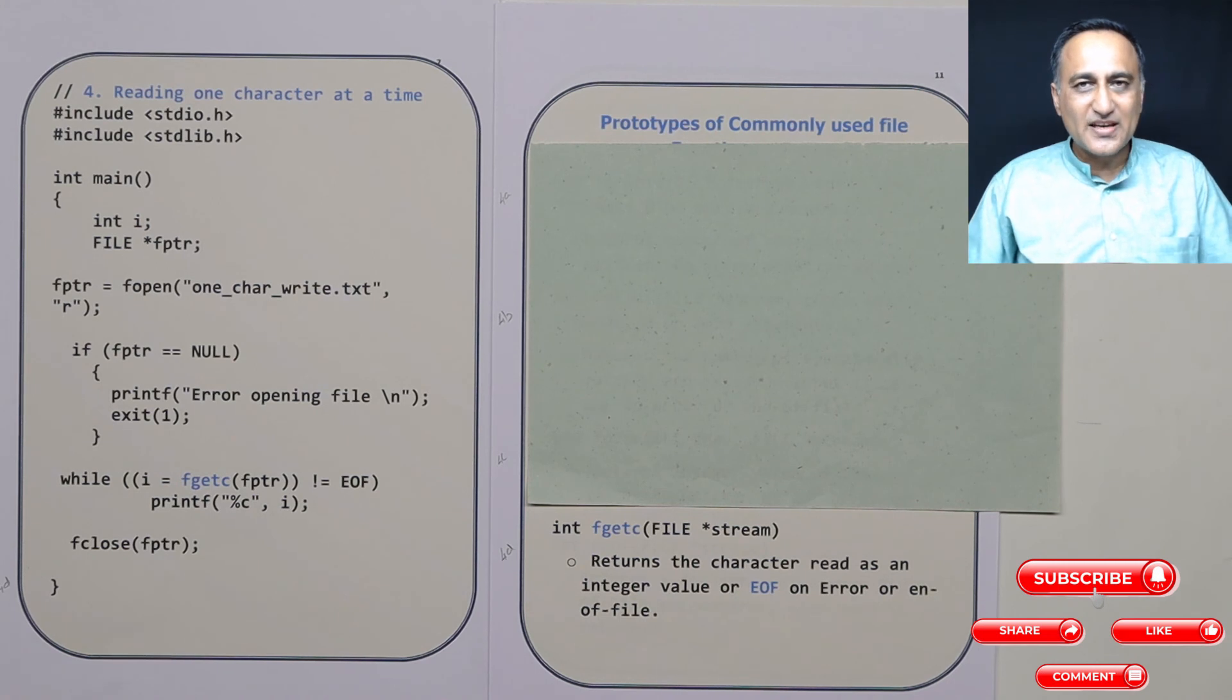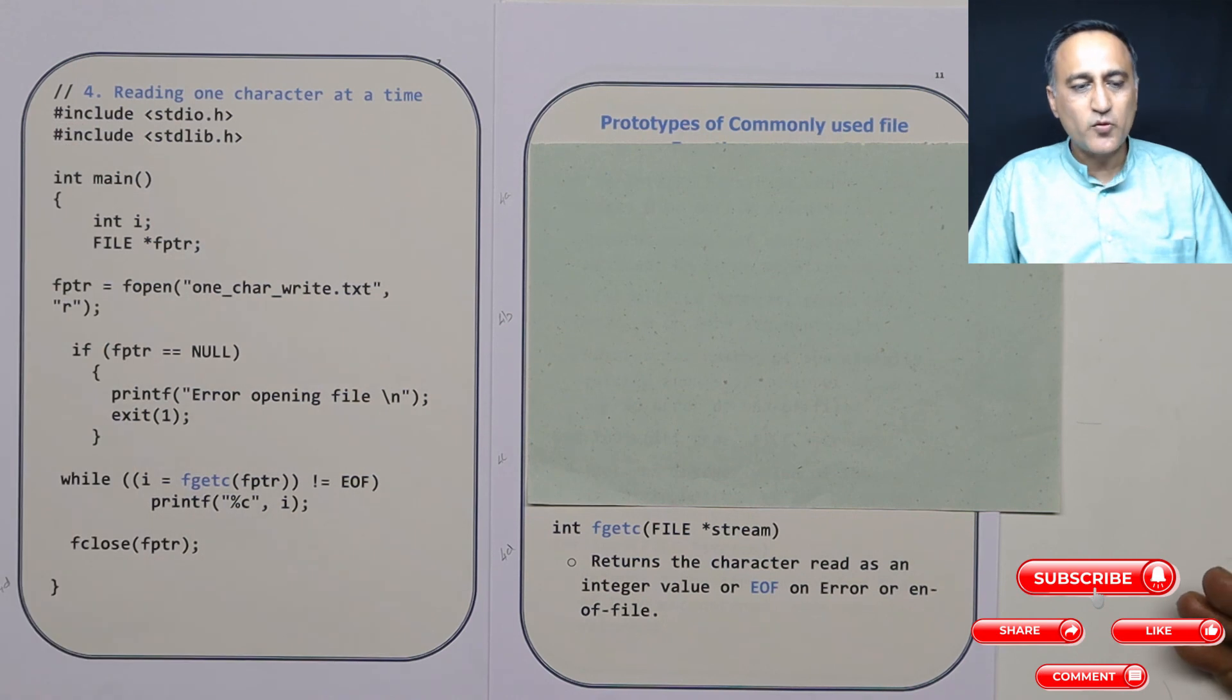If it reaches end of the file it will return end of the file, or if it encounters error it will return an EOF value. So if it returns an EOF value that means it has reached end of the file or some error has happened. So this should help you understand how you read one character at a time from a file.